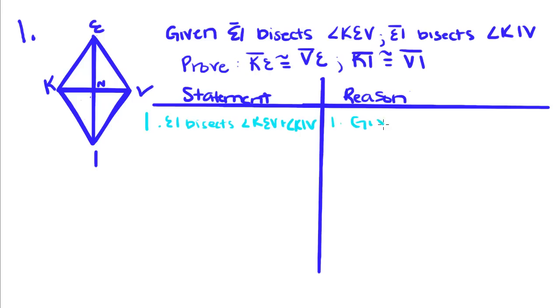Okay, so what I just said, remember, was when a segment bisects an angle, it splits it into two congruent parts. So if this line bisects this angle, that means that this angle is congruent to this angle. So angle NEK is congruent to angle NEV.